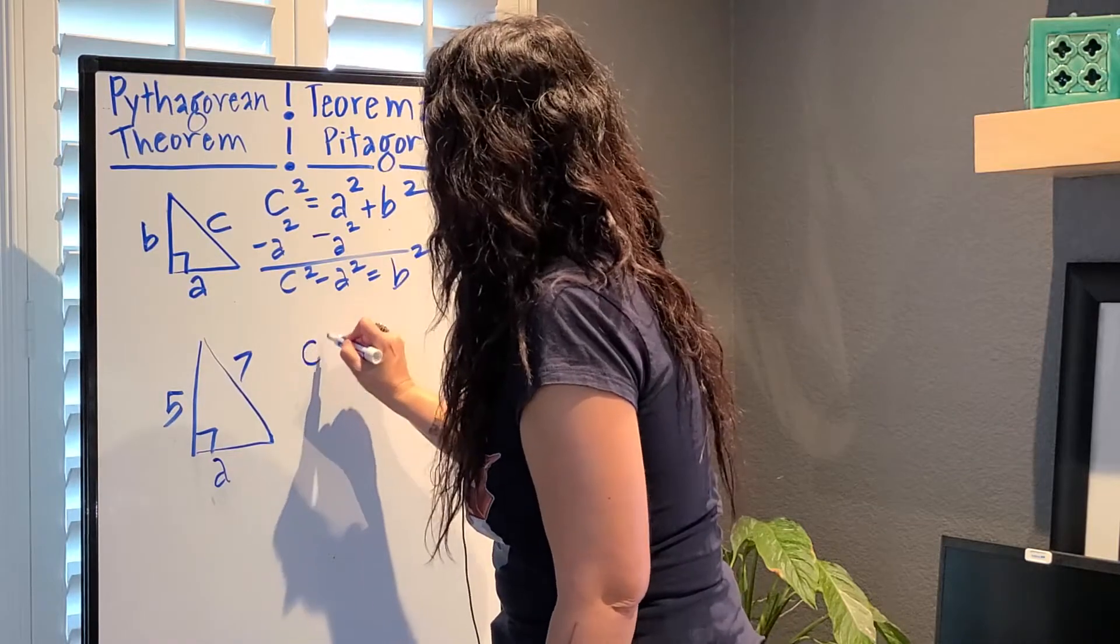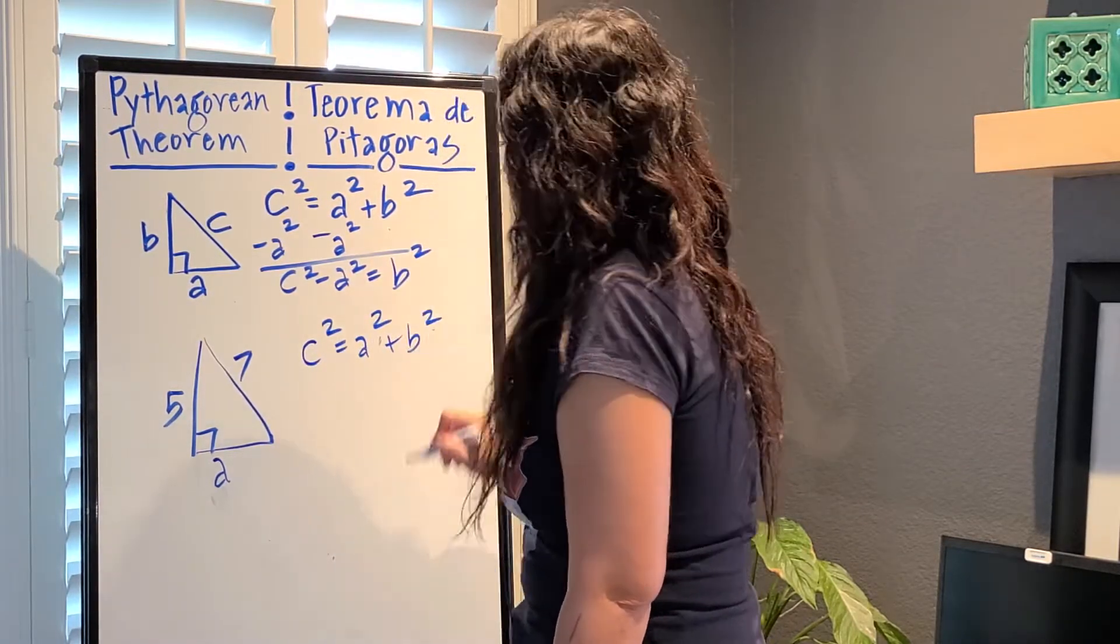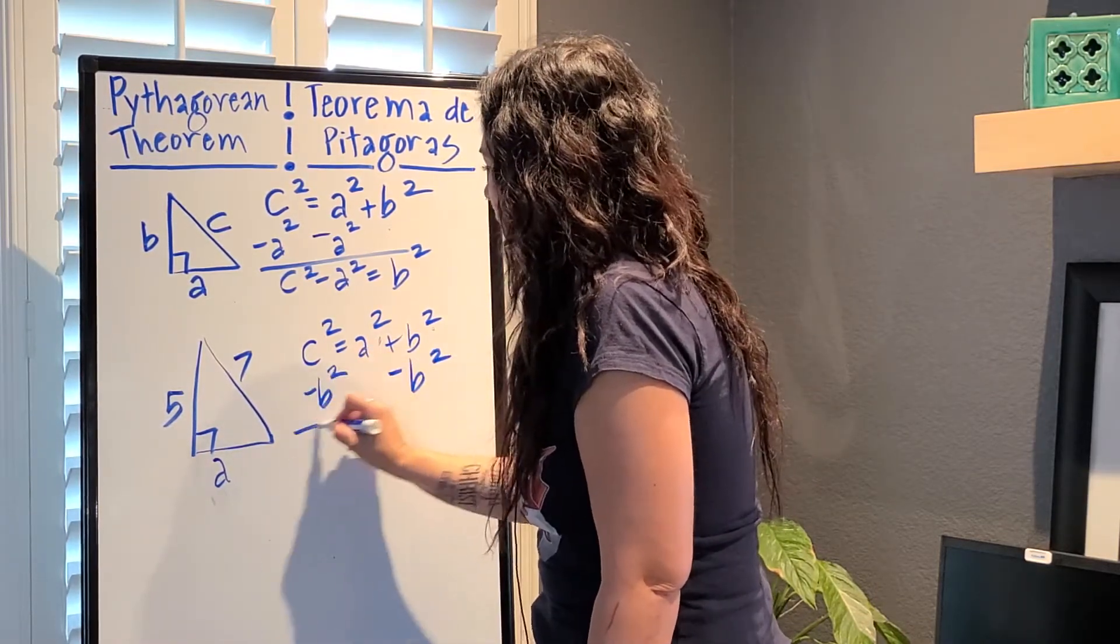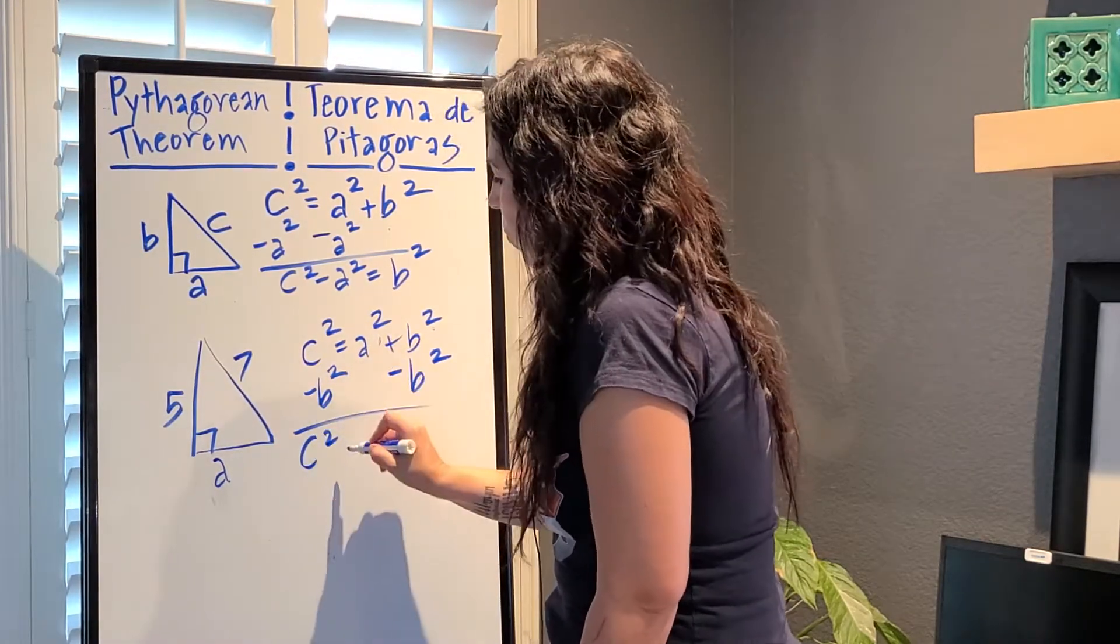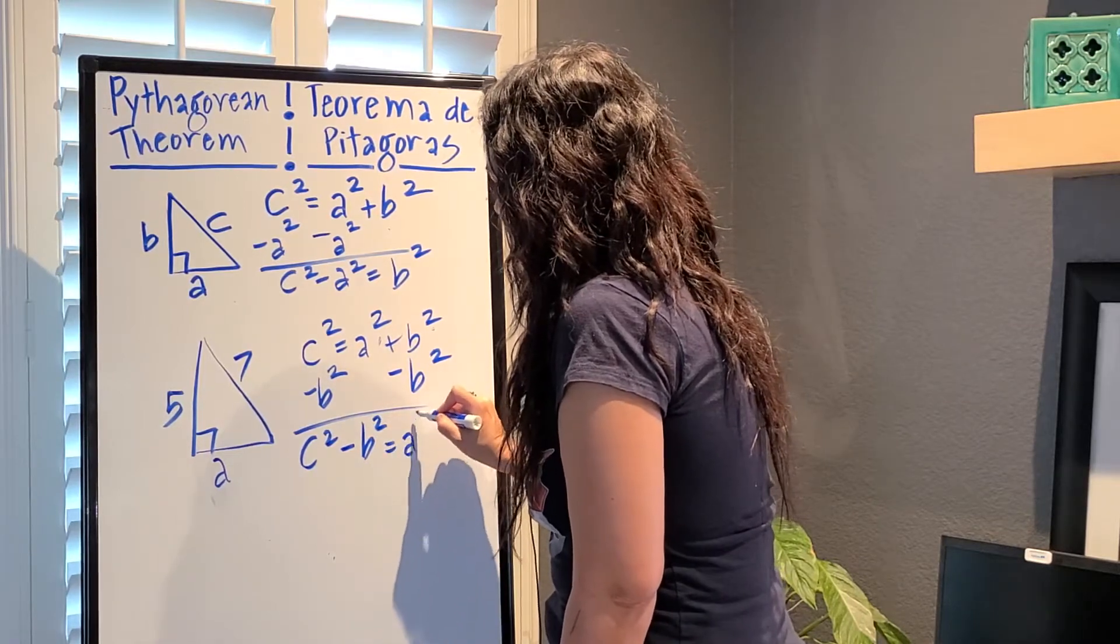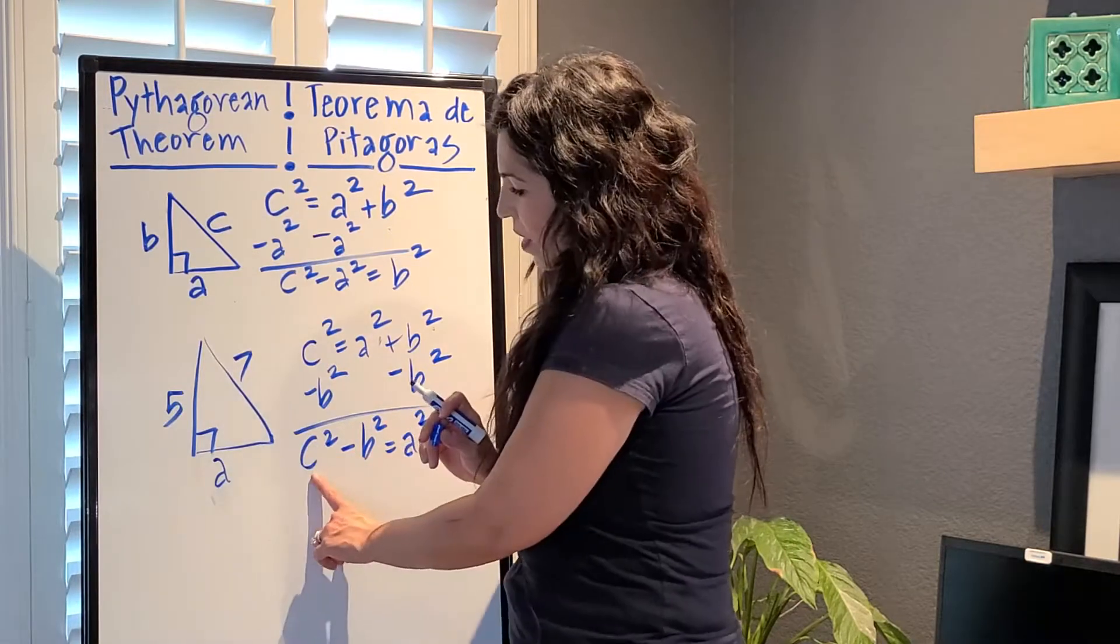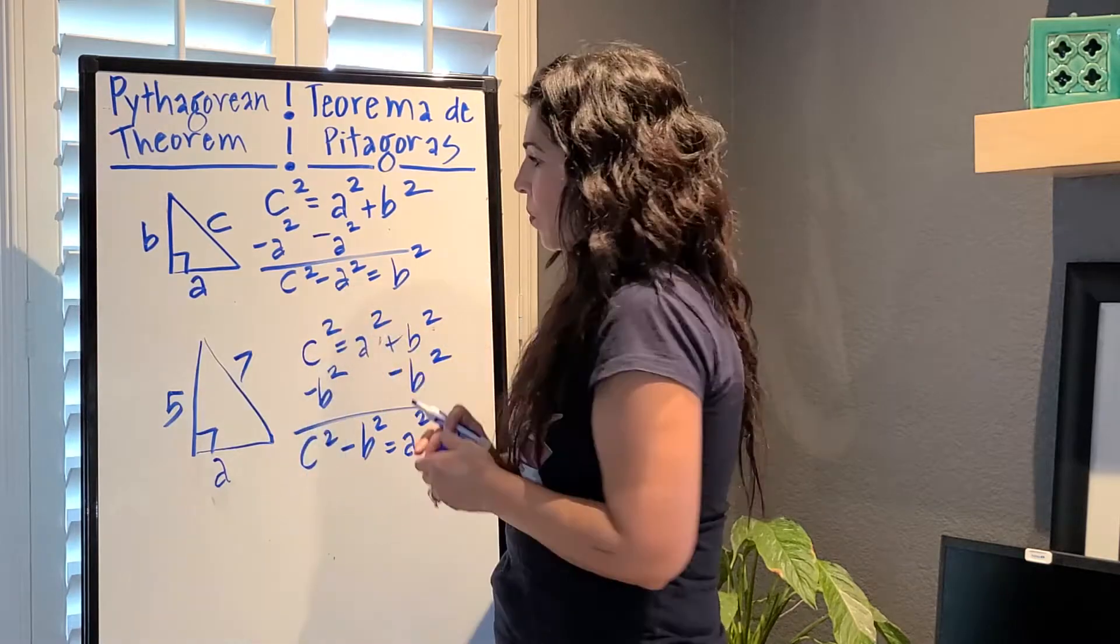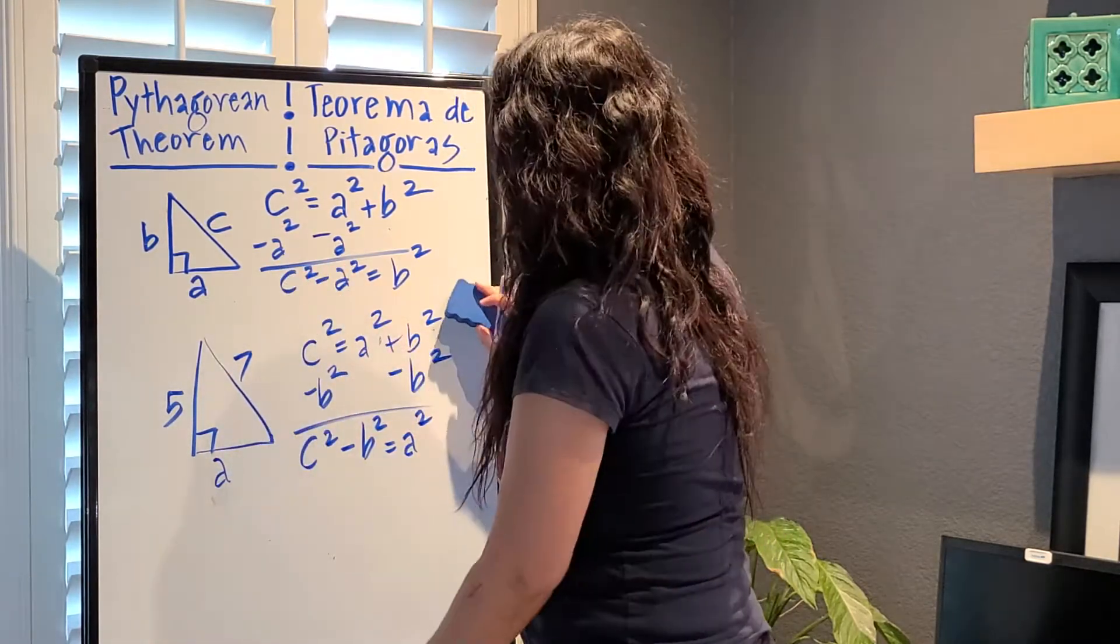So if in my formula, la fórmula A squared plus B squared, si llevamos la B al cuadrado al otro lado, so if we subtract, vamos a restar la B al cuadrado y tenemos C al cuadrado menos la B al cuadrado vale, o es la A al cuadrado. So now we can see that C squared minus B squared equals A squared. Simply very similar to this equation. Es muy similar a la ecuación que usamos anteriormente.